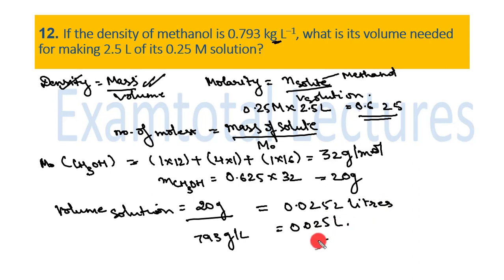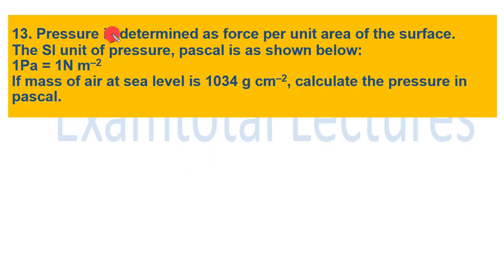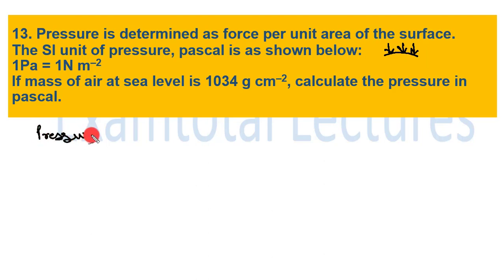This is the volume of methanol to which we add water to make a 2.5-liter solution of 0.25 M. Question 13 involves a formula and unit conversions. The definition given is: pressure is force per unit area of the surface. Pressure P = F / A.